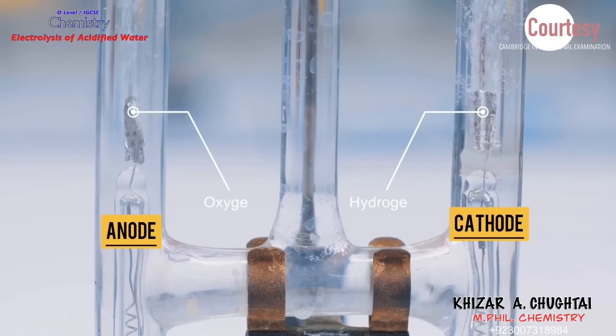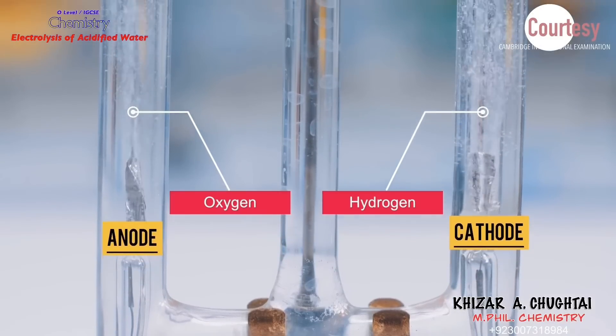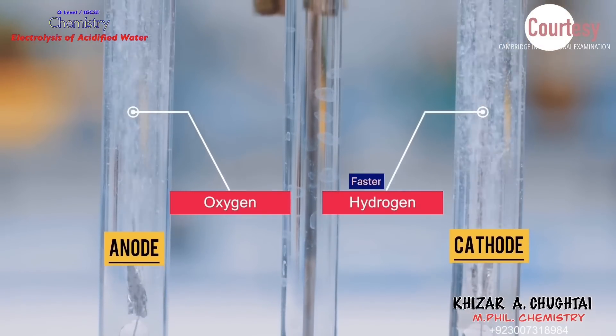Hydrogen and oxygen are produced on these terminals. Production of hydrogen gas is faster than the production of oxygen gas.